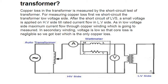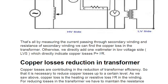We apply voltage to the HV side until the LV side reaches its rated current. As the maximum current flows through the copper winding on the low voltage side, this current is measured. In the secondary winding the voltage is low, so core loss is negligible. Therefore, the loss we measure here is essentially only the copper loss.